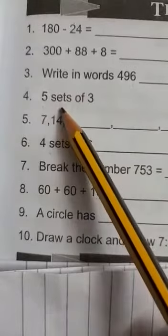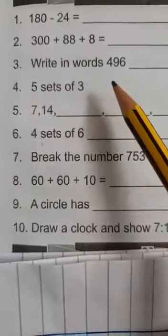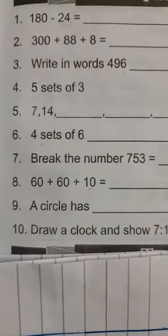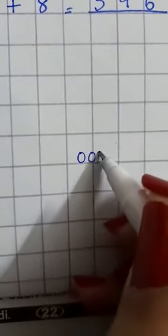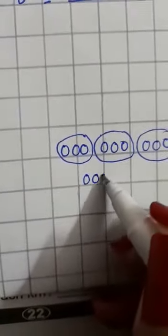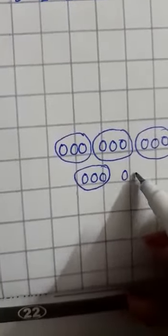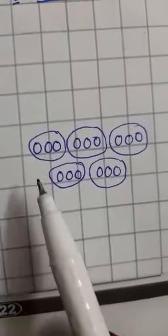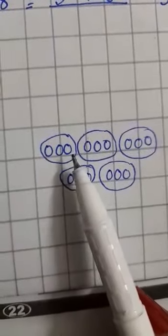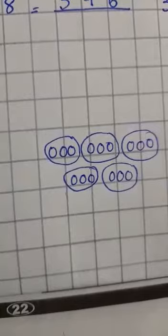Number four: five sets of three. You have to make five sets of three over here. So how you will make? Draw one set of three, two sets of three, three sets, four sets, five sets. Now you can see there are five sets and in every set we have three. Like this you have to draw.